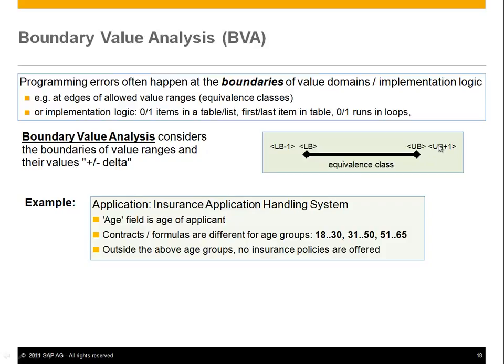You also need to test upper bound plus one and minus one — in the integer case — to make sure those outside values are not included and are handled properly. Coming back to the insurance application handling system with the age field, we had age ranges of 18 to 30, 31 to 50, and so forth.